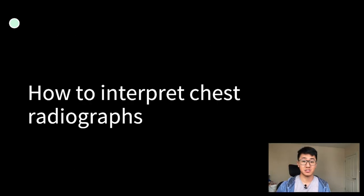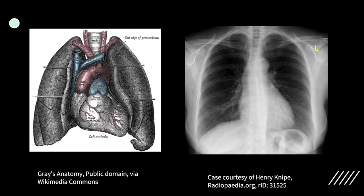Now let's talk about how to interpret chest radiographs. Essentially, there are three colours you'll see on a chest x-ray and these represent the densities of the materials. So you either have white, which is dense bone or metal. You'll have black, which is gas, and you can see that outside the body and also in the lung fields. And lastly, you'll have grey, which can represent anything in between, so things like soft tissue.